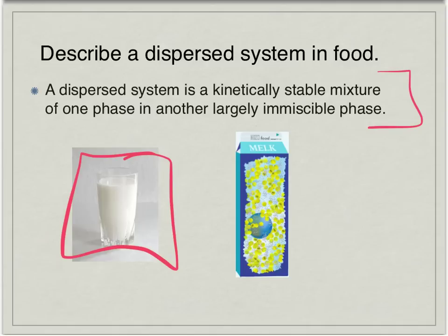A good example of a dispersed system is milk. There are proteins in the milk, there's calcium in the milk, and it's also mainly water. But you can't see the different pieces — kind of what we generally think of in chemistry as a homogeneous solution. If we're talking about food, a dispersed system is kinetically stable, meaning it's not going to settle out.